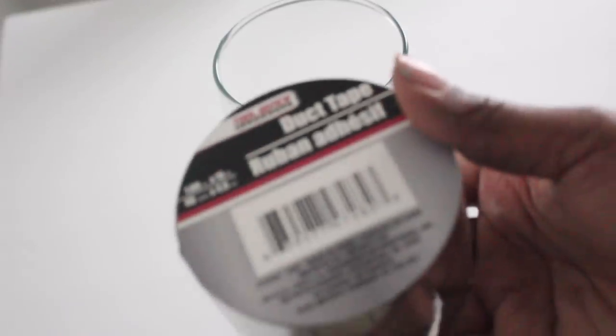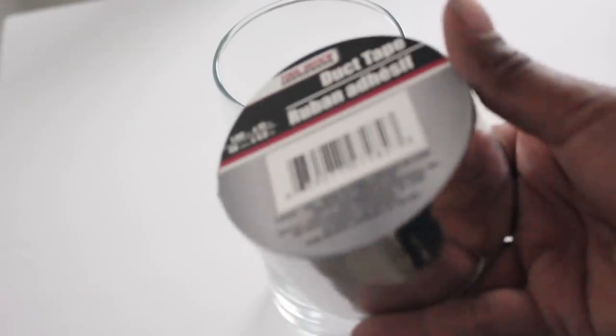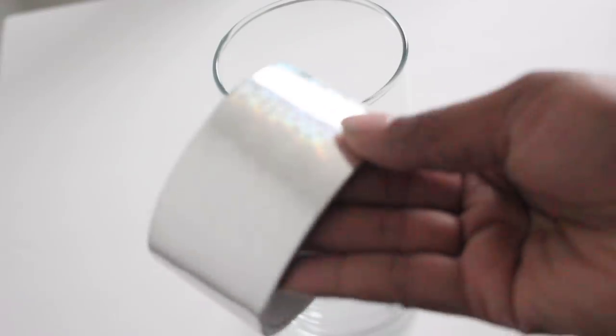For the project, I'm going to use a cylinder vase as well as reflective duct tape that I found in the hardware section of Dollar Tree.